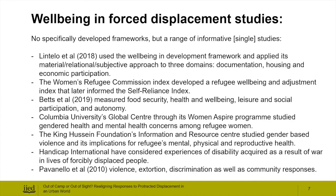In some cases, wellbeing was measured in relation to a particular interrelated set of domains. Bets et al. looked at wellbeing as part of measuring health, food security, leisure, social participation, and autonomy. Columbia University's Women Aspire project and King Hussein Foundation's Information and Resource Center considered wellbeing in relation to health, mental health, gender-based violence, and reproductive health in Jordan. Handicap International looked particularly at wellbeing among refugees in relation to disability. Some studies make no mention of wellbeing at all, but provide data on refugee experiences such as violence, extortion, discrimination, and social and community solidarities that speak to relational and context-specific aspects of wellbeing.